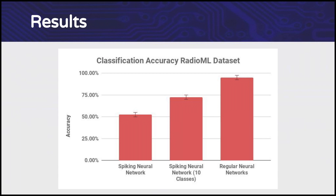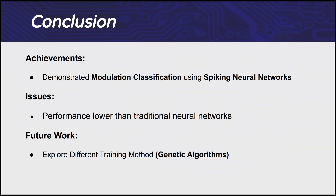Using a technique called quantization, we were able to reduce the memory requirement for static parameters by 75% and for runtime parameters by 25%, while accepting a drop in accuracy of around 1.5%. In conclusion, the performance of our SNN is still significantly lower than what can be achieved using regular neural networks. We think this is at least in part due to the less developed training methods available for spiking neural networks, and future experiments could be done using an alternative training method based on the concept of genetic algorithms.